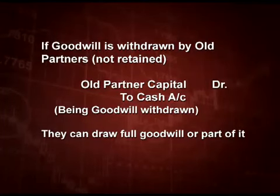Old partners are the receiver — they are debited and cash is going out, so it is credited. Note: they can draw full goodwill or part of it. Suppose they get 10,000 and 5,000, and they want to withdraw half of that — so one of them will withdraw 5,000 and the other 2,500. It all depends on what is given in the question — if it says half withdrawn, they will withdraw half; if one fourth, they will withdraw one fourth.